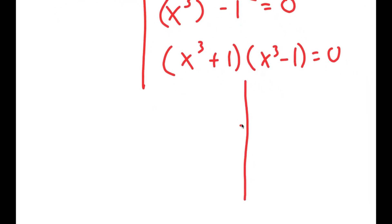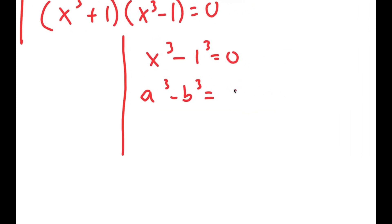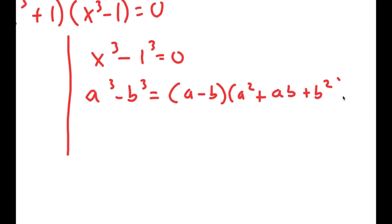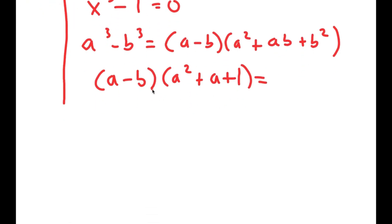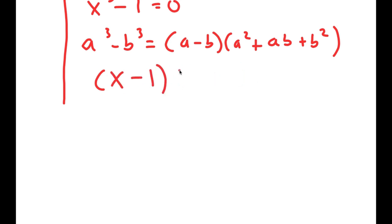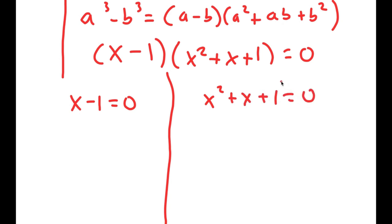For x to the power of 3 minus 1 equals 0, I'll rewrite this as x to the power of 3 minus 1 to the power of 3 equals 0, and use the difference of cubes property. This turns into x minus 1 times x squared plus x plus 1 is equal to 0, giving two more equations: x minus 1 equals 0 and x squared plus x plus 1 equals 0. For x minus 1 equals 0, I add 1 on both sides and get x equals 1.